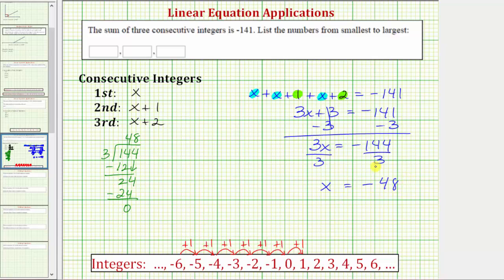So if x equals negative forty-eight, the first consecutive integer is negative forty-eight. The next consecutive integer would be negative forty-eight plus one, which equals negative forty-seven. And the third consecutive integer would be negative forty-eight plus two, which equals negative forty-six.